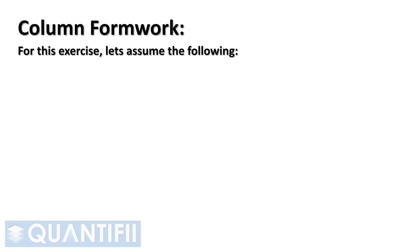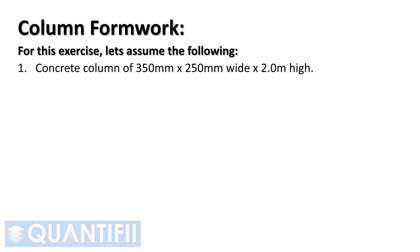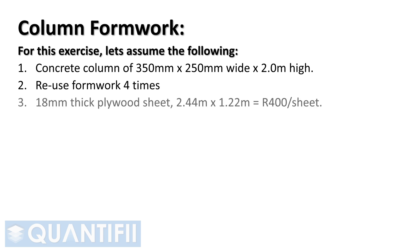Moving on to our first cost analysis, let's work through the steps of pricing column formwork. To tender accurately, contact your local suppliers for current rates and substitute your local currency into the analysis. For this exercise, let's use the South African Rand and assume a concrete column of 350 mm by 250 mm wide by 2 m high. We will assume reusing the formwork 4 times.